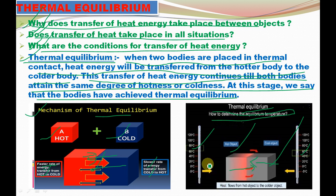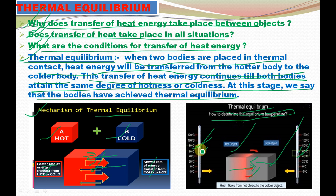To determine the thermal equilibrium temperature, take one hot body at 80 degrees and one cold body at 40 degrees, with two thermometers, placed in thermal contact. After some time, they attain one stage — thermal equilibrium — at which both bodies show the temperature of 60 degrees. The hotter body gradually decreases from 80 to 60, and the colder body increases from 40 to 60.